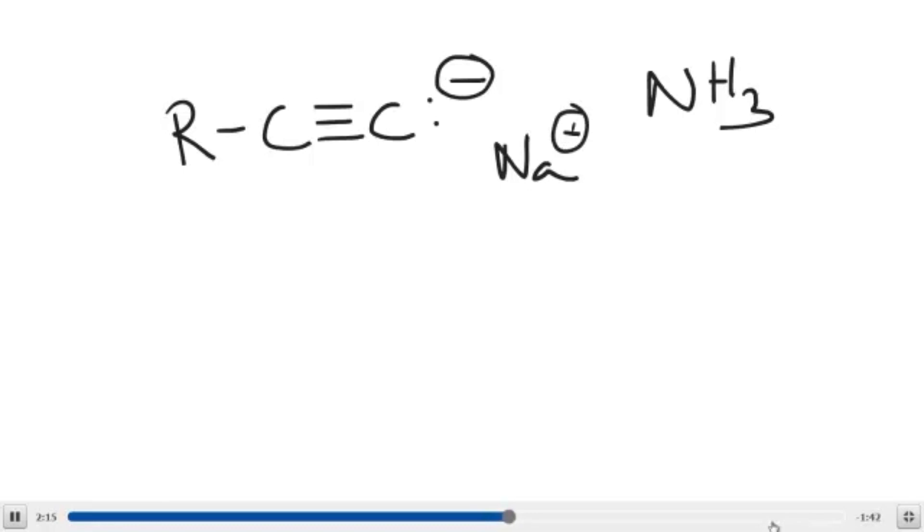If you want to make a carbon-carbon bond, you would then take this base and react it with a primary substrate. And it must be a primary substrate. If you remember that chart I gave you on iLearn, it tells you that primary substrates, when they react with anything, go through an SN2 substitution unless it is a strong, bulky base like tert-butoxide. This is not a bulky base.